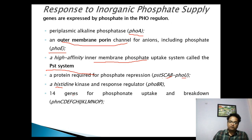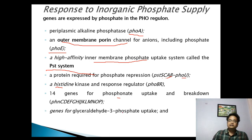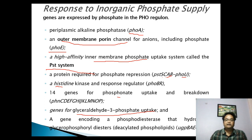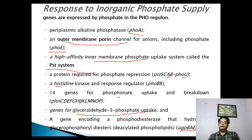Besides that, there are 14 genes encoded by this system for phosphonate uptake and its breakdown. There is also a gene for glyceraldehyde-3-phosphate uptake and a gene encoding the phosphodiesterase that hydrolyzes glyceraldehyde-3-phosphate. These genes are encoded by UGP, D-A-E-C-Q. There is no need to remember these gene names.